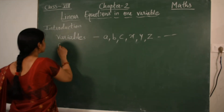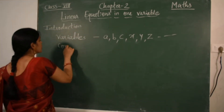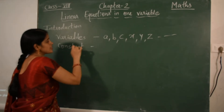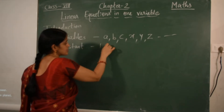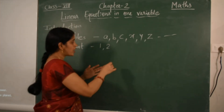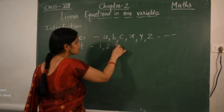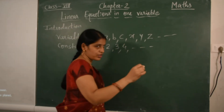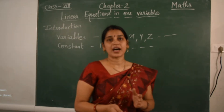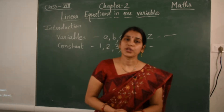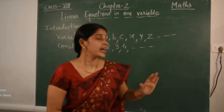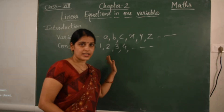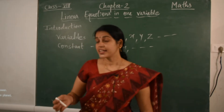Next one is constant. Constants are numbers like 1, 2, 3, 4 and so on. Any numbers are denoted as constants, and the value of a constant is fixed — it does not change.